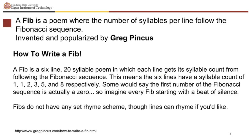How to write a Fib? A Fib is a six-line, 20-syllable poem in which each line gets its syllable count from following the Fibonacci sequence. This means the six lines have a syllable count of one, one, two, three, five, and eight respectively. Some would say the first number of the Fibonacci sequence is actually zero, so imagine every Fib starting with a beat of silence. Fibs do not have any set rhyme scheme, though lines can rhyme if you'd like.